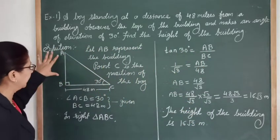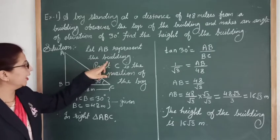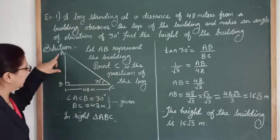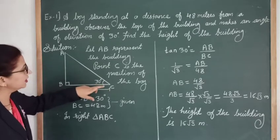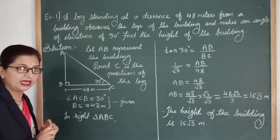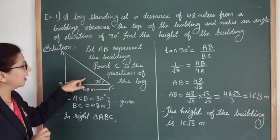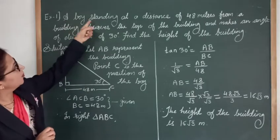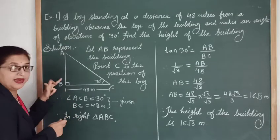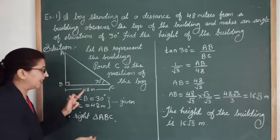Here I have drawn triangle ABC, in which AB represents the building and point C is the position of the boy. The boy is looking at the top of the building, so since the person is looking upward, there is an angle of elevation — angle ACB is 30 degrees. The boy is standing at a distance of 48 meters from the building, so BC equals 48 meters.